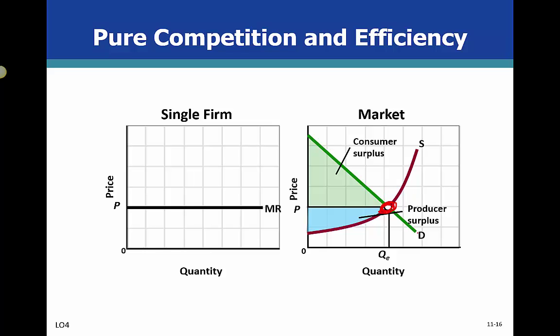Consumers along the demand curve above equilibrium would be willing to pay more. They would be willing to pay more for the product, but because equilibrium is where it is, they wind up paying less than they would have been willing to pay for it.